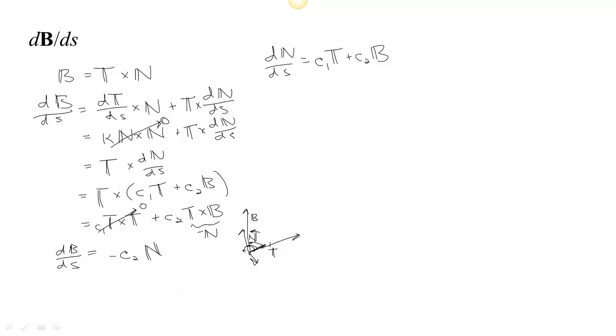Now remember, on our curve, if we have our tangent this way, then this is saying that if B changes, B moves away from N, basically. Right? c2 determines how it moves. But it moves.